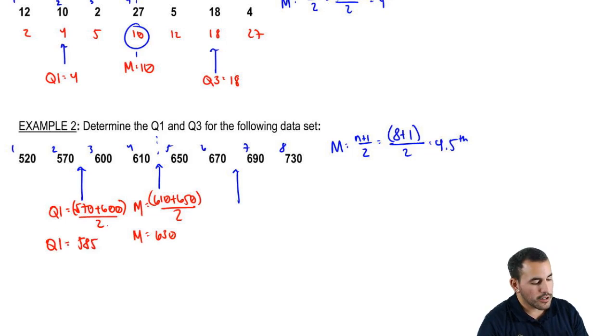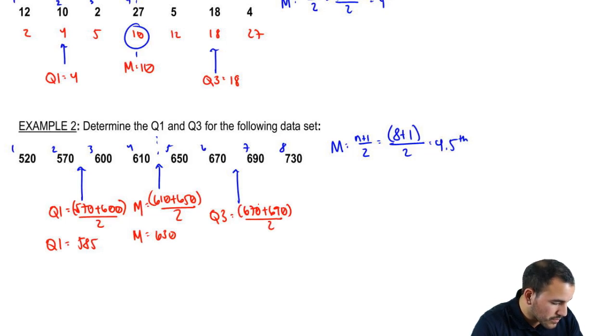Now let's get Q3. Q3 is just the same thing on the opposite end. We're in between two numbers, just like we were on the left side. So let's average these two: (670 + 690)/2. So Q3 is 680.